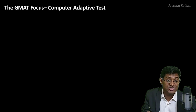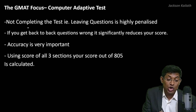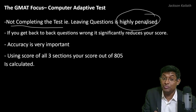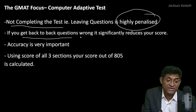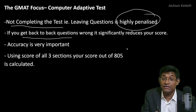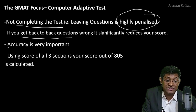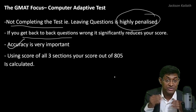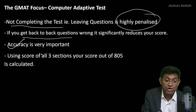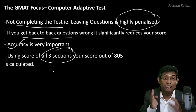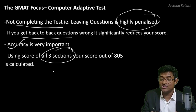Because the GMAT Focus is a computer adaptive test, not completing the test — that is, leaving questions unanswered — is highly penalized. Also, getting back-to-back questions wrong significantly reduces your score. Accuracy is very important on the GMAT. Scores for all three sections are used to compute your final score on the GMAT Focus.